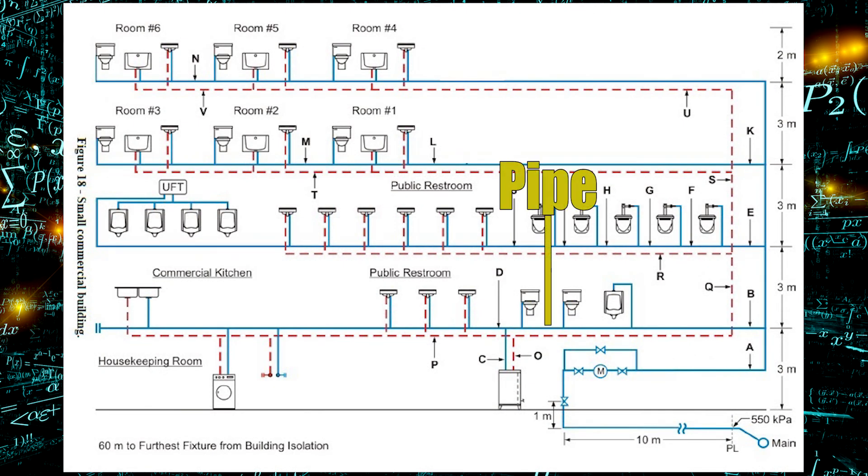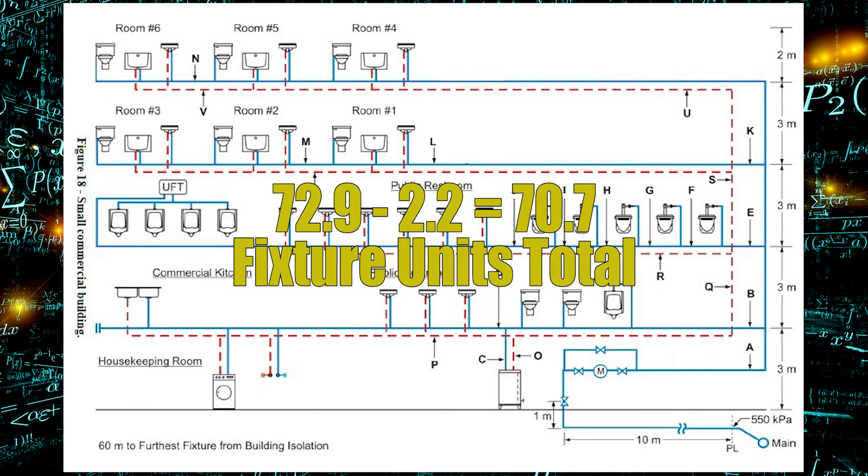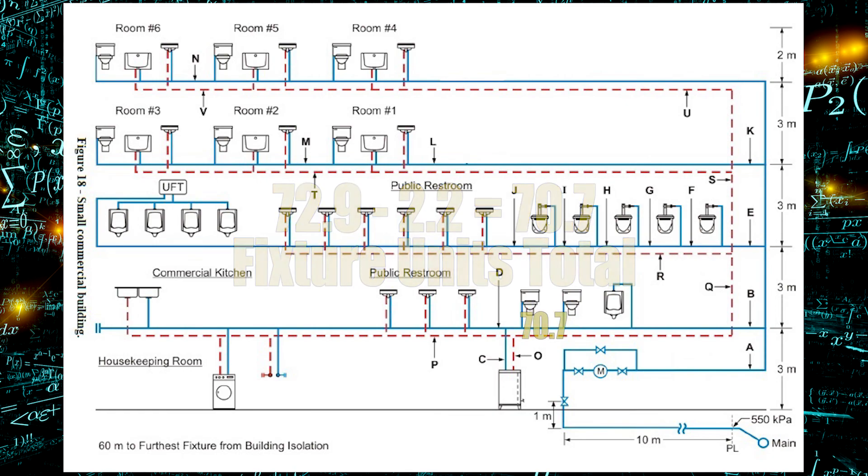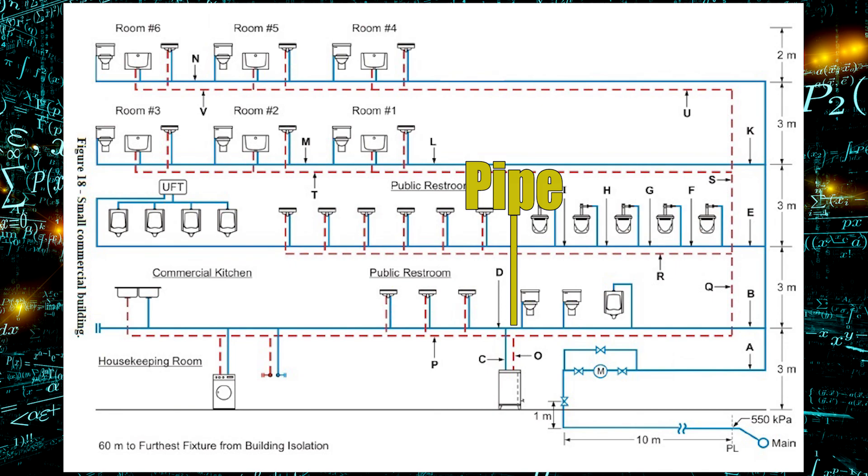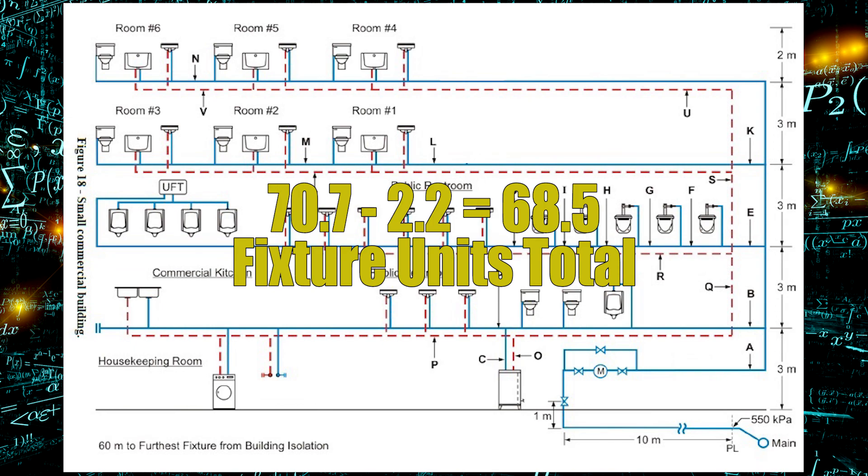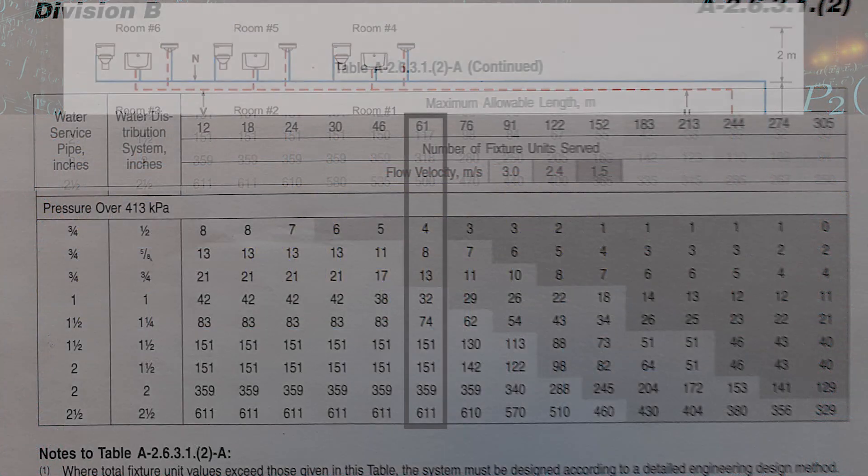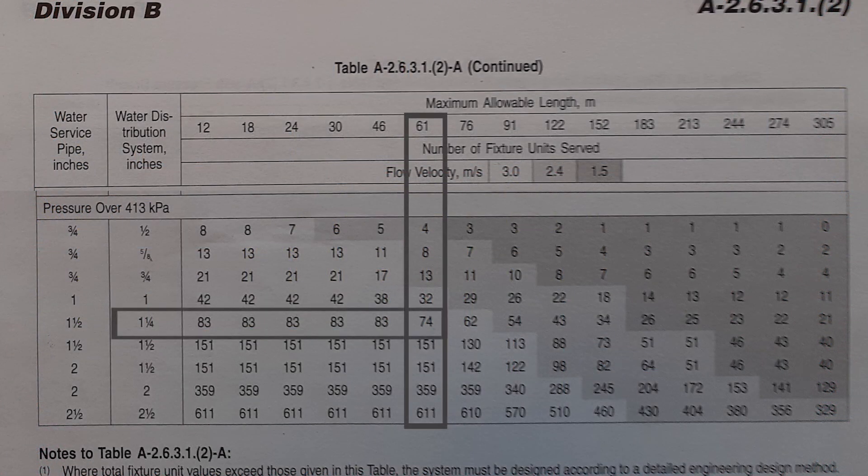So now between the two water closets we will have 72.9 minus 2.2 or 70.7 fixture units. And then when we go to the last little piece of pipe that is between the hot water tank supply and the last water closet we're going to subtract off 2.2 more fixture units and so now we're left with 68.5. Both of those pipes will need to be inch and a quarter.